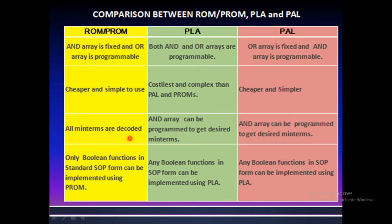In ROM, all the minterms are decoded. In PLA, the AND array can be programmed to get the desired minterms. Only Boolean functions in standard SOP — sum of products — form can be implemented using PROM. Any Boolean functions in standard SOP form can be implemented using PLA, and any Boolean functions in SOP form can also be implemented using PAL.